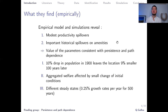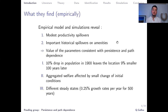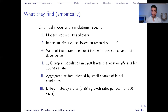Empirically, they find modest productivity spillovers but important historical amenity spillovers. With simulations, they find really strong persistence of shocks — for example, a 10% drop in population in the 1900s leaves the location 9% smaller 100 years later, an elasticity of 0.89. Aggregate welfare is also affected by very small changes in initial conditions. They found that differences in welfare can be quite important: for example, a difference in growth rate of 0.25% over 500 years between regions leads to really massive differences in aggregated welfare.